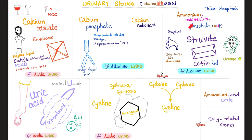The evil triple phosphate — ammonium magnesium phosphate, struvite, or staghorn calculi — looks like a coffin lid and precipitates in alkaline urine. The patient's urine smells like ammonia. It is shaped like the renal pelvis and is usually so large that it requires urological intervention. Risk factors include infections with urease-positive bacteria capable of producing urease, which converts urea into ammonia. Ammonia is alkaline and will alkalize the urine, increasing the risk of staghorn calculi.